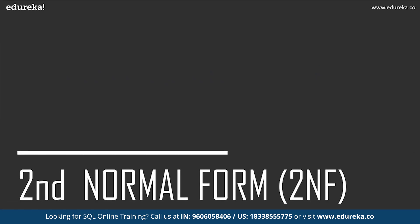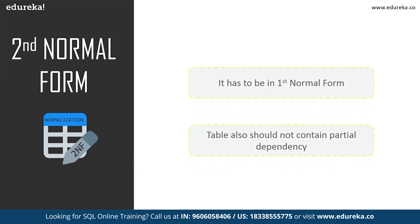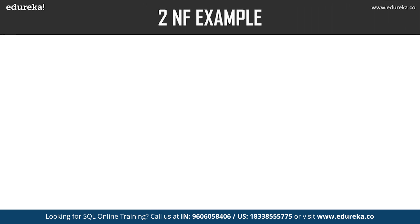Now let's move to second normal form, originally defined by E.F. Codd in 1971. A table is in second normal form only when it fulfills two conditions: it must be in first normal form, and the table should not contain partial dependency. Partial dependency means a proper subset of a candidate key determines a non-prime attribute. Attributes that form a candidate key are called prime attributes, and the rest are non-prime attributes — for example, employee ID and department ID are prime, while office location is non-prime.